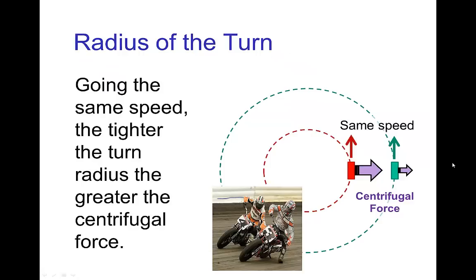Consider two motorcycle riders going the same speed — one on the inside of the turn, one on the outside. Going the same miles per hour, the rider on the inside of the turn experiences a greater centrifugal force and thus would have to lean more to maintain dynamic balance compared to the rider on the outside of the turn.